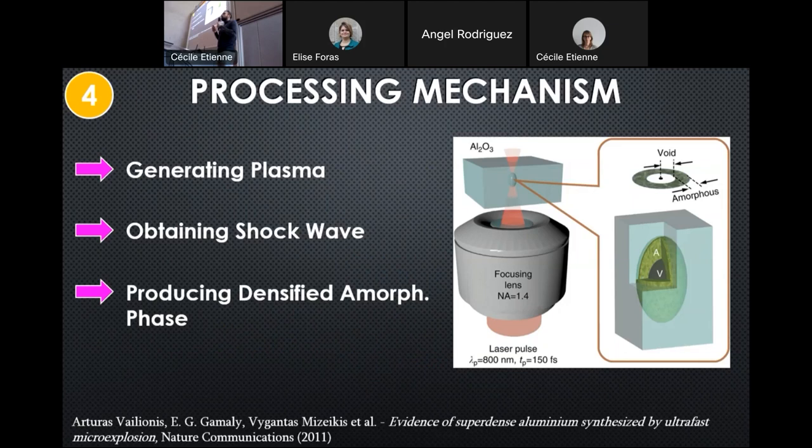After the micro explosion, we obtain in this micro-exploded area plasma which acts like a shockwave and compresses the material around it. Finally, we will have a nano void and empty area in the center and we will have an ultra-dense densified amorphous phase around the material.